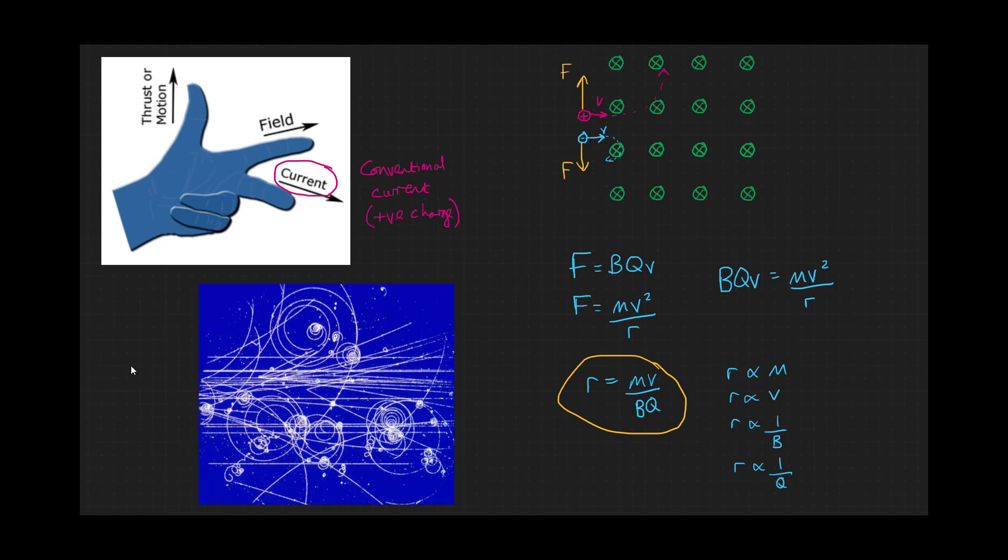This little example is an illustration of how useful magnetic fields can be in particle physics, because they can be used to help identify particles from their properties. Applying magnetic fields to a cloud chamber can produce patterns like this when particles pass through.